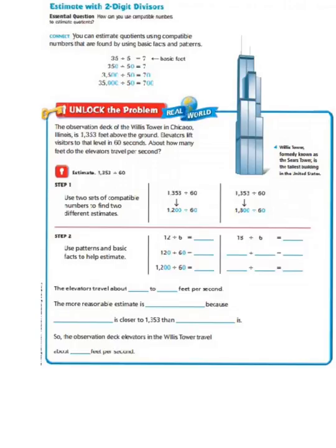So let's take a look at our unlock the problem. The observation deck of the Willis Tower in Chicago, Illinois is 1,353 feet above the ground. Elevators lift visitors to that level in 60 seconds. About how many feet do the elevators travel per second?